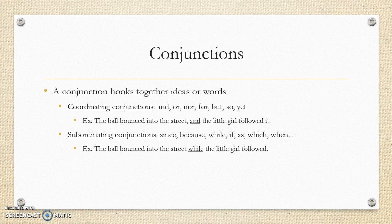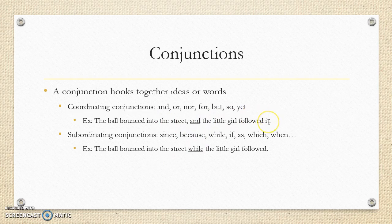Conjunctions hook together different ideas, and there are two kinds. Coordinating conjunctions — there are only seven: and, or, nor, for, but, yet, so. In our example: 'The ball bounced into the street' is a full sentence, 'the little girl followed it' is also a full sentence, and 'and' hooks them together with a comma.